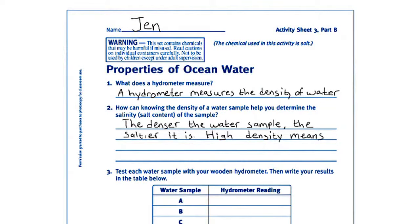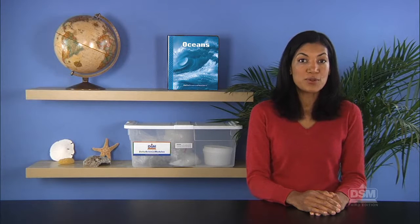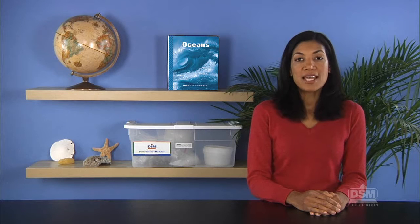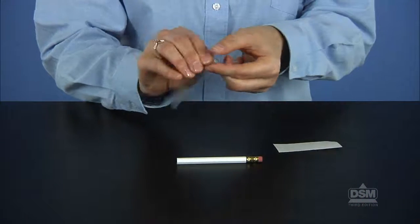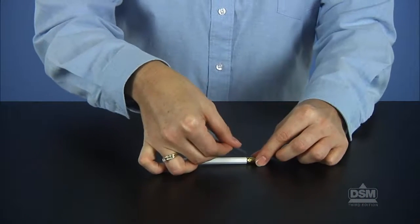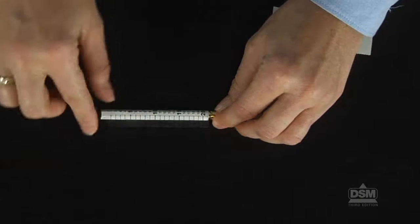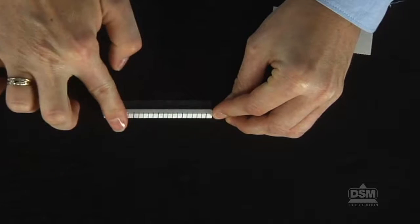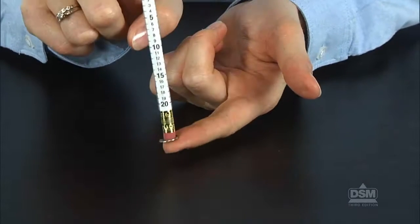To review, instruct students to answer Question 2. Next, divide the class into teams of four and distribute the materials. Tell students to peel off the hydrometer sticker from the backing and affix it just above the metal ring on the pencil, with the 20 closest to the eraser end. Then carefully push the thumbtack into the eraser — this end will be the bottom of the hydrometer.